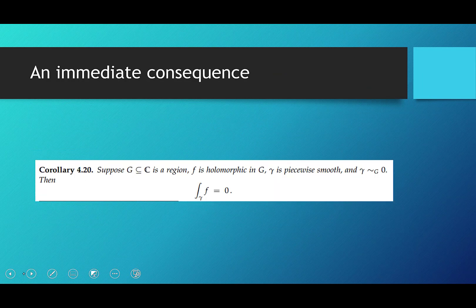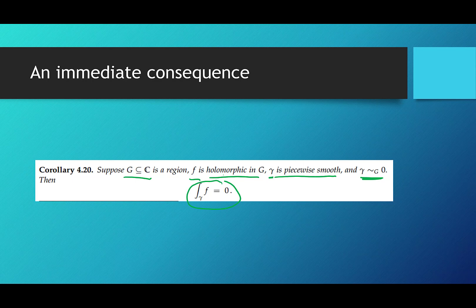An immediate consequence of Cauchy's Theorem: suppose G is a region, f is holomorphic, and gamma is a piecewise smooth curve that is contractible — homotopic to a point. Then integrating your function over gamma gives zero. This makes sense: if your path is contractible, it's essentially a point, just like in calculus when you integrate x² from 1 to 1, you get zero. If you integrate over a path that can be continuously shrunk to a point, you get zero.